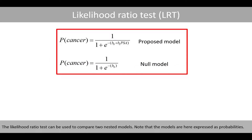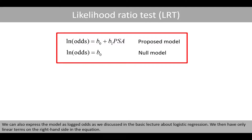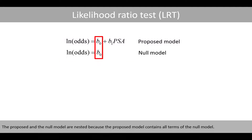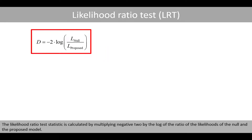The likelihood ratio test can be used to compare two nested models. Note that the models are here expressed as probabilities. We can also express the model as logged odds, as we discussed in the basic lecture about logistic regression, where we have only linear terms on the right-hand side. The proposed and the null model are nested because the proposed model contains all terms of the null model.